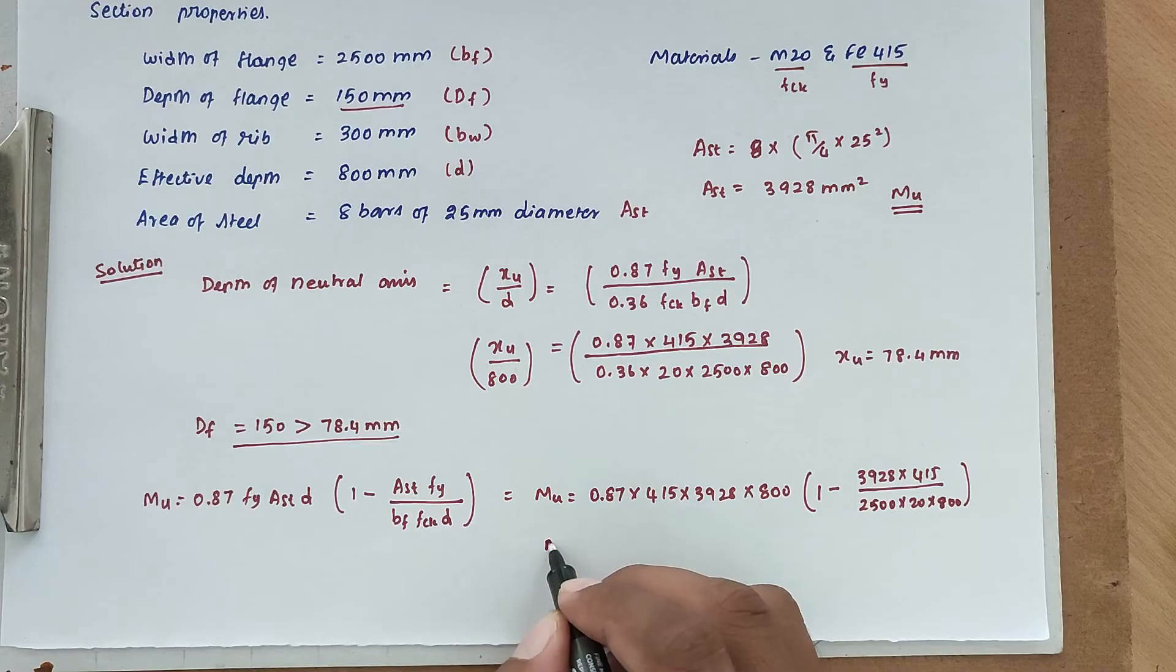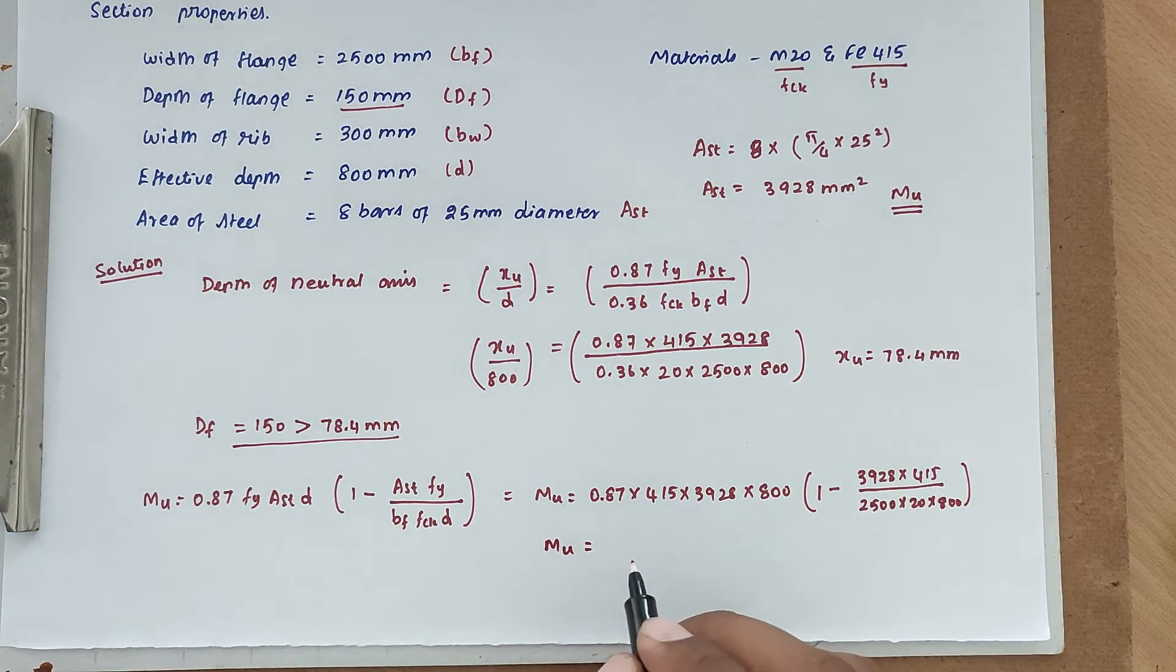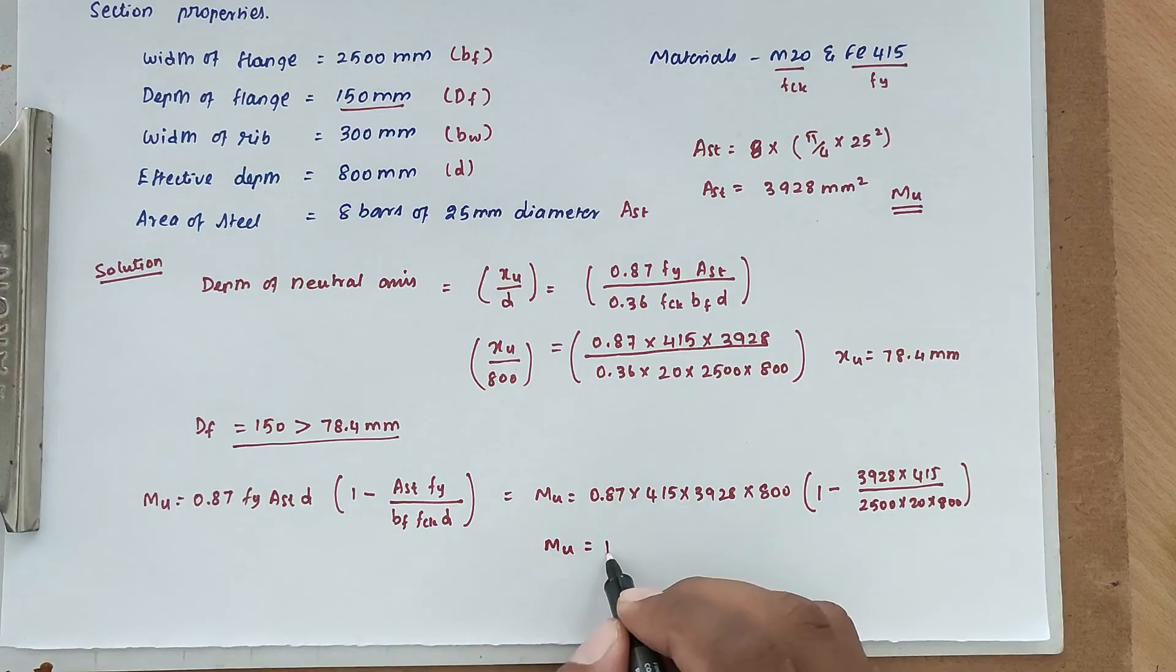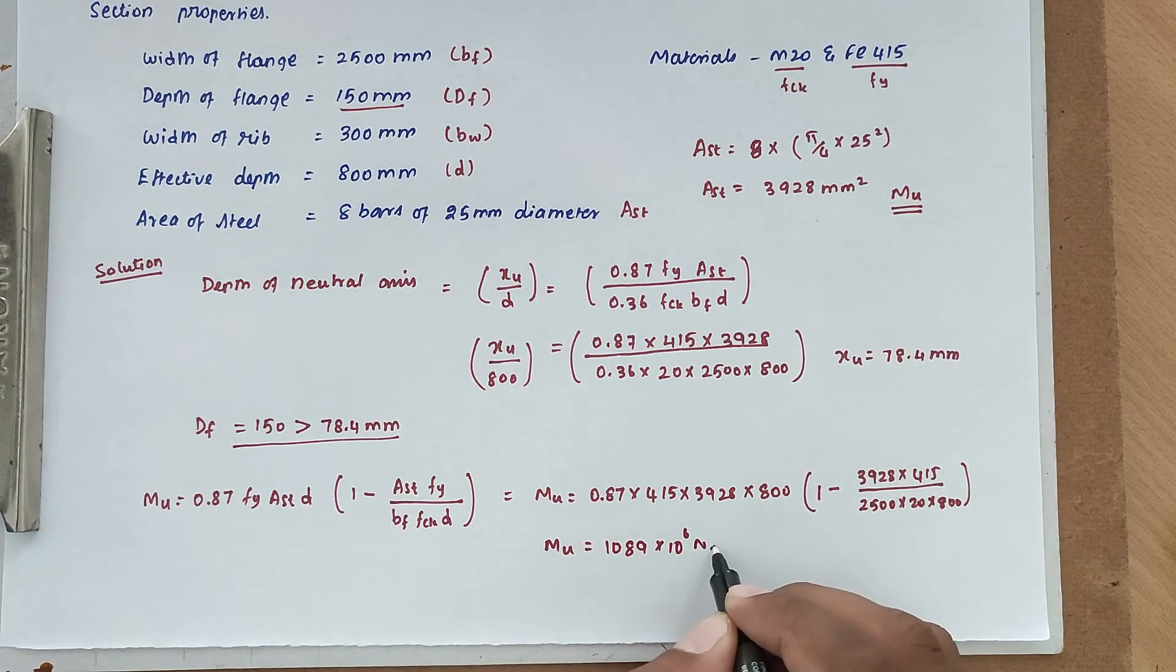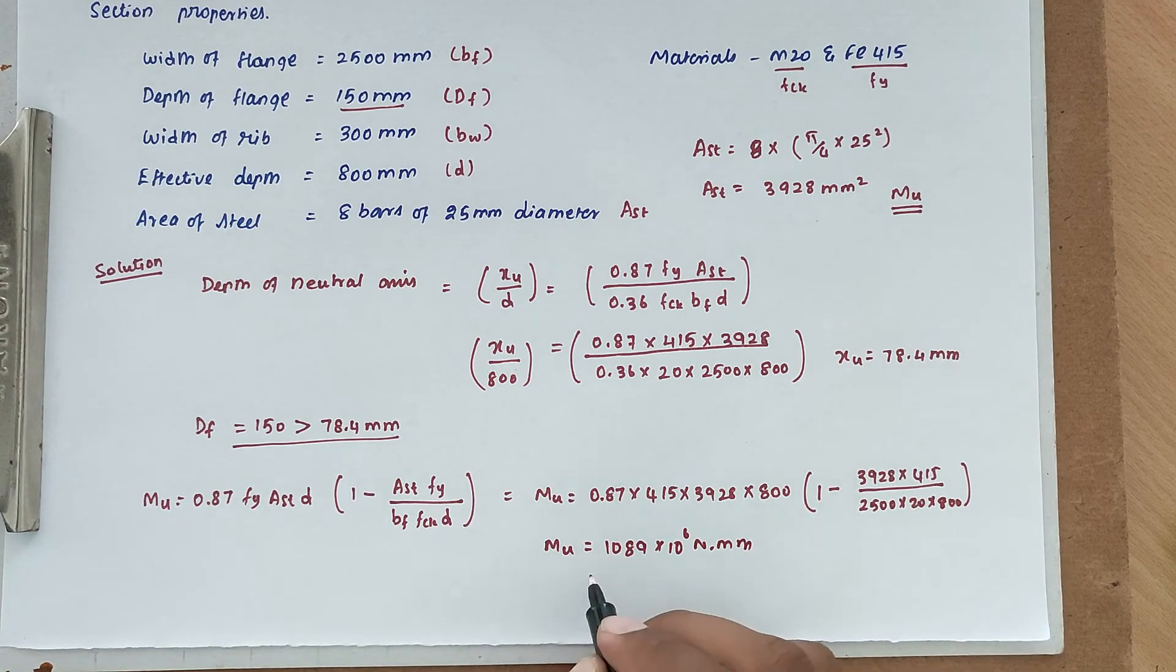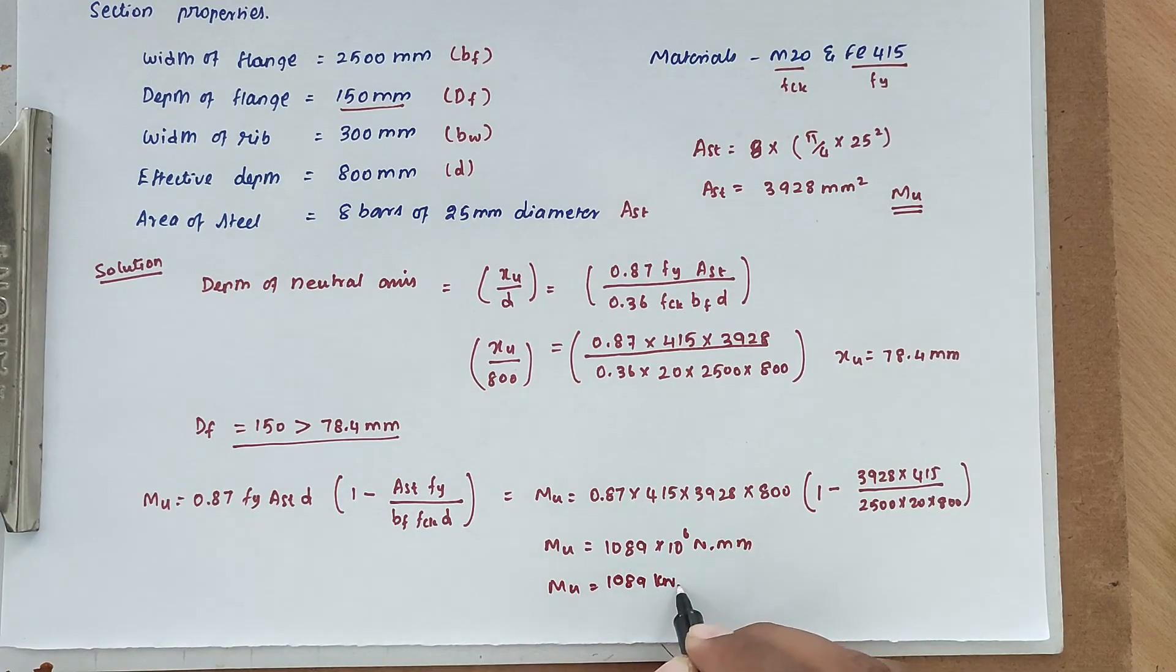Solving this we got the value MU, that is moment of resistance equal to 1089 into 10 power 6 newton mm. We can convert it to kilonewton meter, so MU equal to 1089 kilonewton meter.